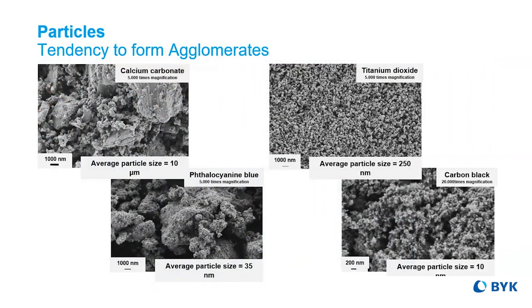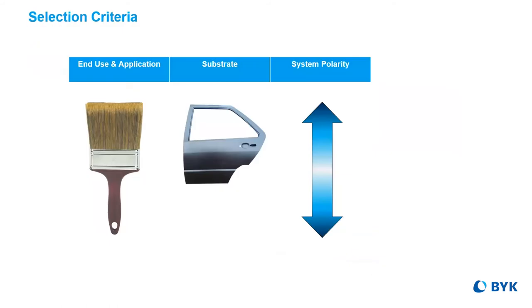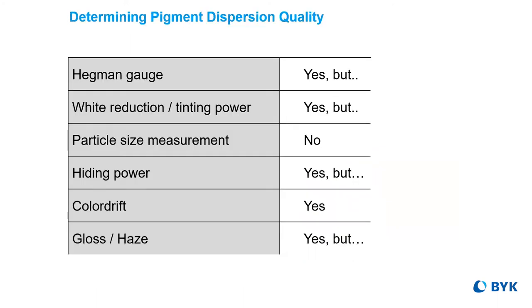The problem: all pigments and fillers have a tendency to form agglomerates, no matter the ease of wetting, and even the presence of viscosity reduction sometimes, which is most confusing when having this conversation about stabilization quality. This all boils down to the additive selection criteria. At BYK, we do our best to help with that. We separate our labs into end uses to concentrate on different markets. We test several substrates and we focus on system polarity to increase compatibility into your system. All of this research helps us find the best ways to determine dispersion quality.